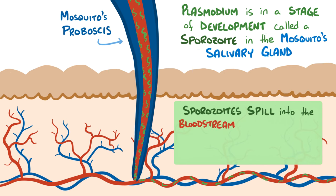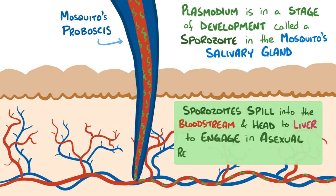Within minutes, the sporozoites reach the liver and mount an attack on the hepatic parenchymal cells, where they start asexual reproduction, also known as schizogony.